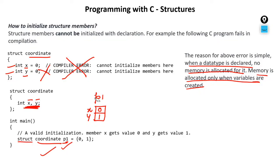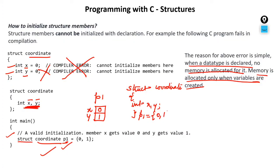There is another way — initializing by declaration with the structure. You write 'struct coordinate' with members int X and int Y, and at the same place create a variable P1 = {0, 1}. The moment you write P1, a variable is created with two parts for X and Y, initialized to 0 and 1. You can name the variable anything — P1, Amit, James — whatever you want. This is the method of initializing structure members.